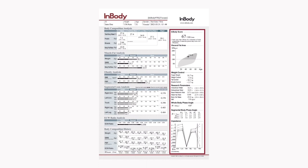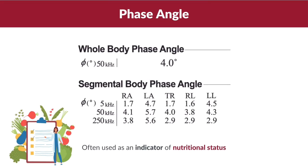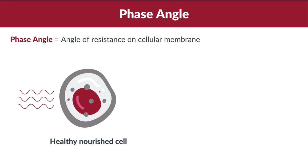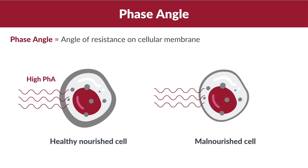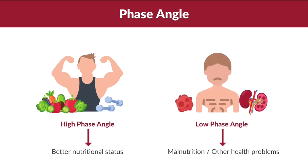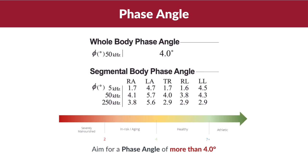Now let's focus on phase angle, which is often used as an indicator of nutritional status in body composition analysis. Phase angle is the angle of resistance on the cellular membrane. A healthy, nourished cell has a thicker cell membrane and electric current takes a longer time to penetrate, resulting in a higher phase angle. A high phase angle is generally associated with better nutritional status, while a lower phase angle may indicate malnutrition or other health problems. It is advisable to aim for a phase angle of more than four.